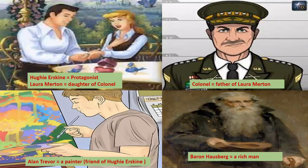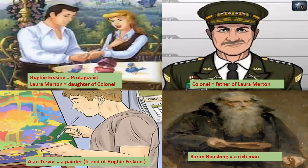In this chapter, five main characters are there. First is Hughie Erskine, that is the protagonist — the main character. Second character is the girl, that is Laura Martin. Laura Martin is the daughter of the Colonel, so Colonel is the father of Laura Martin.